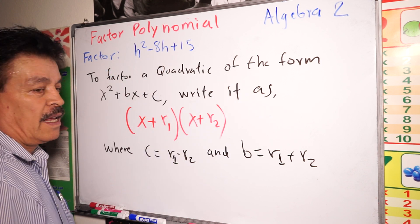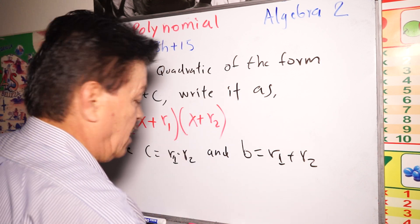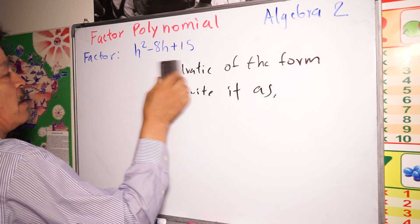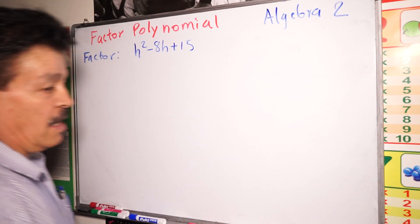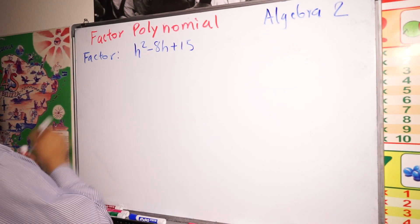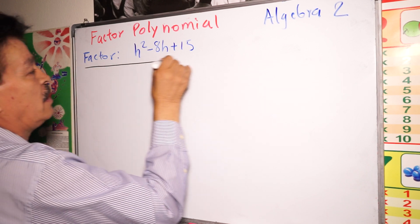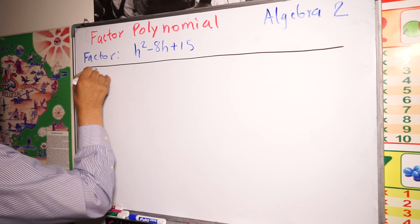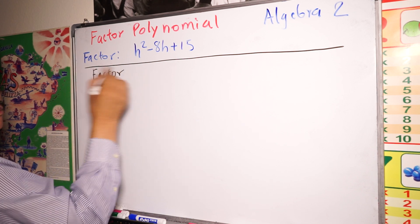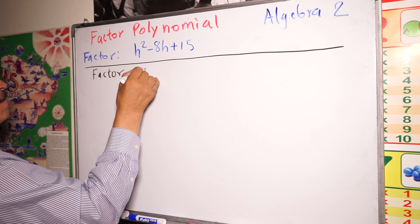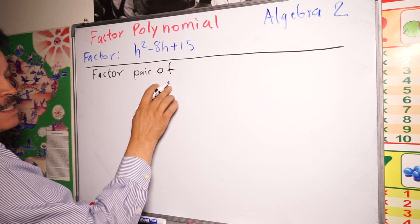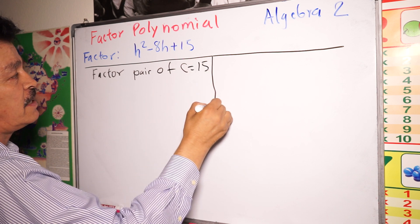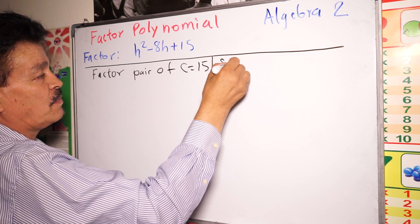Now let's solve the problem. First, I'd like to make a little table — this makes it easy for me and for you. The table will show factor pairs.